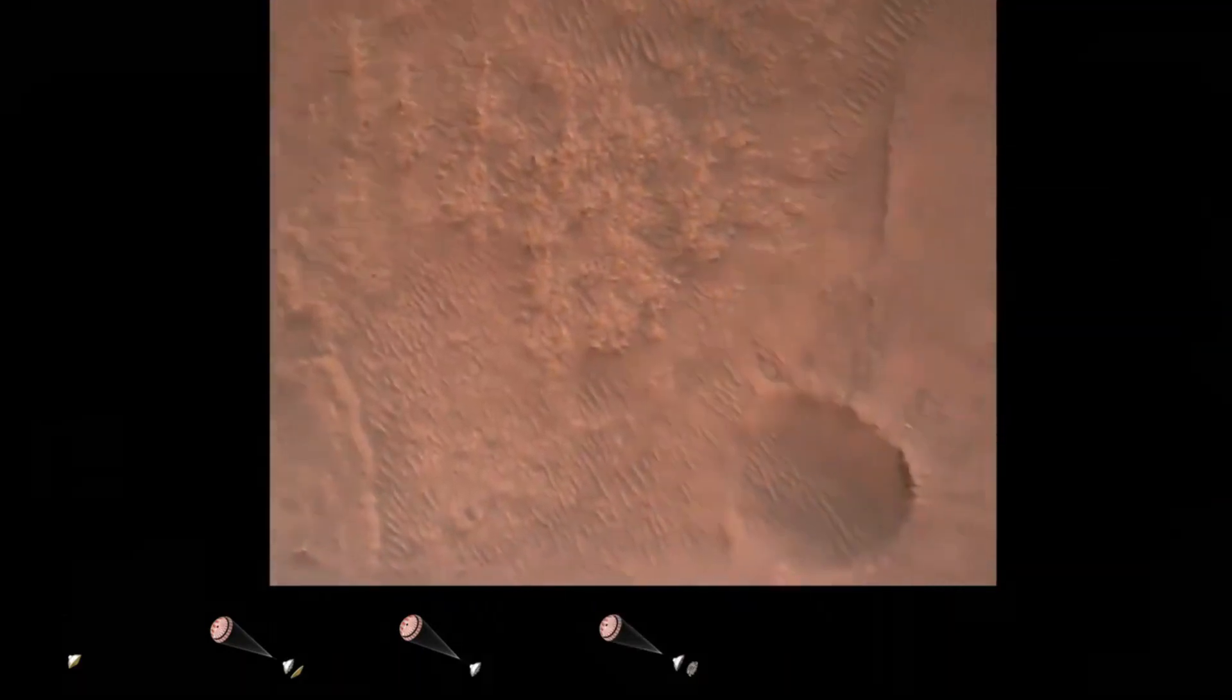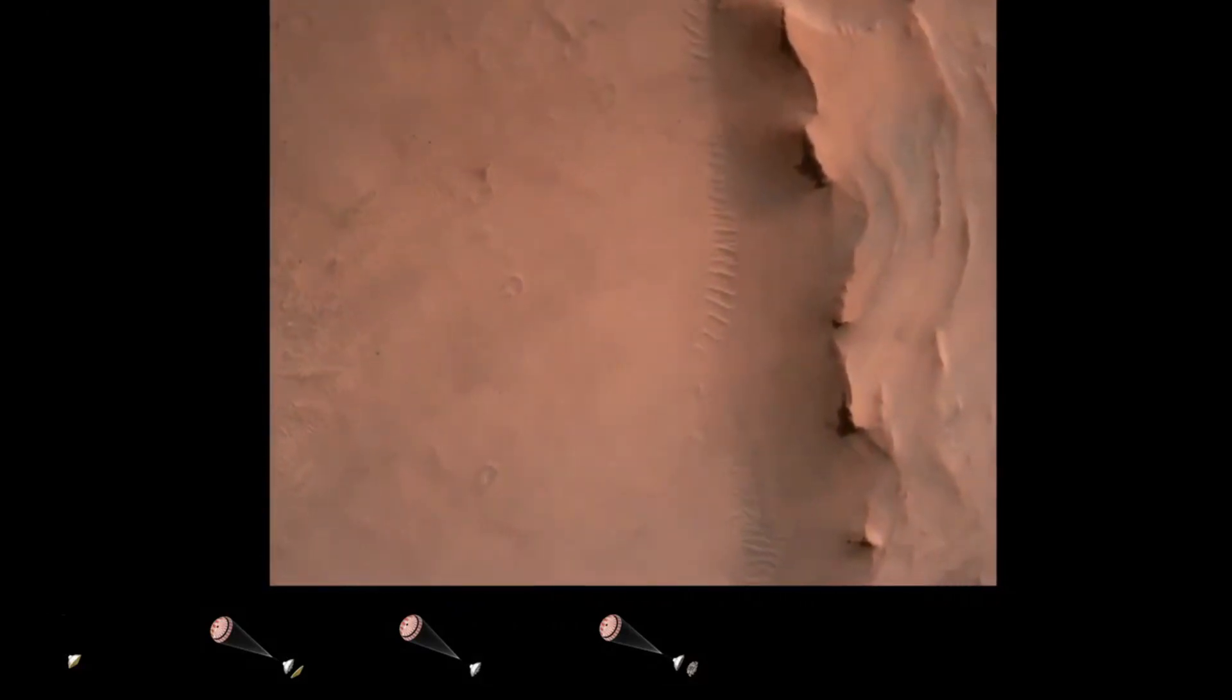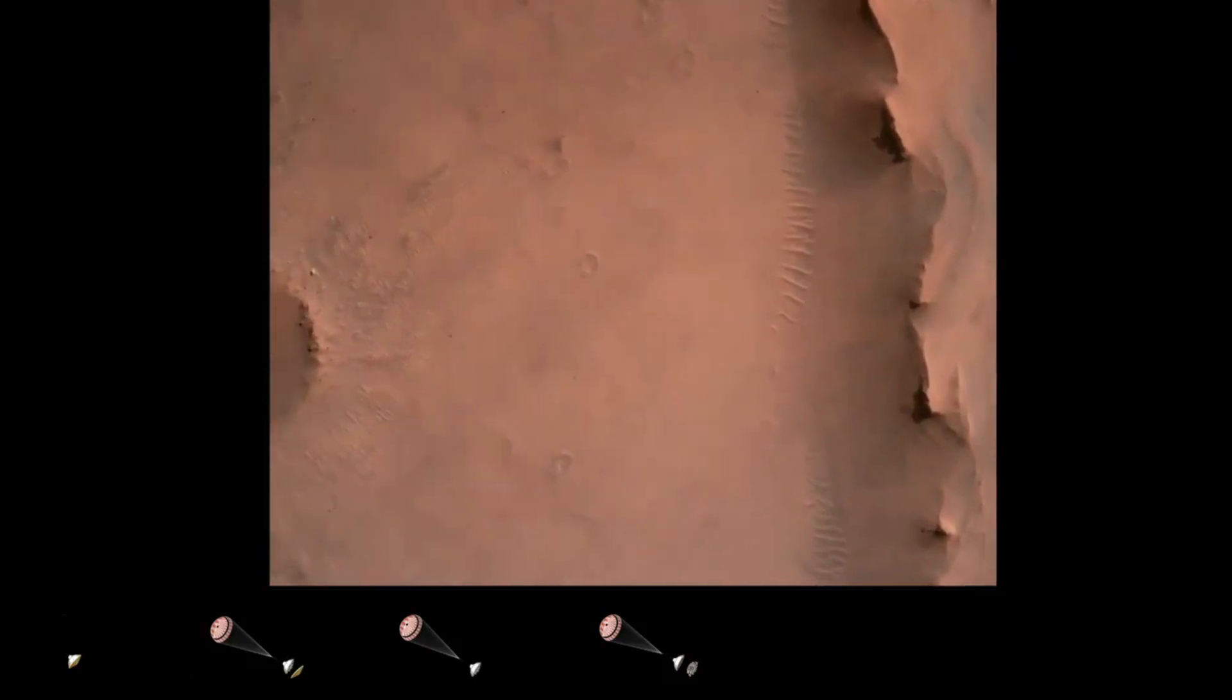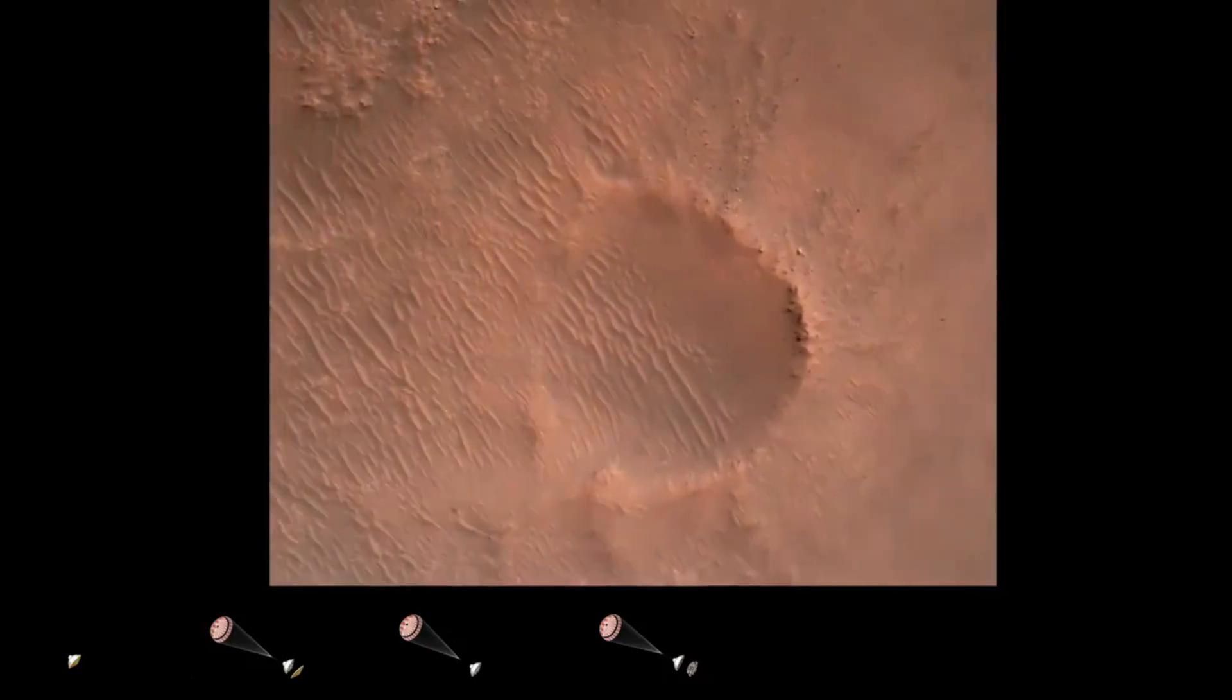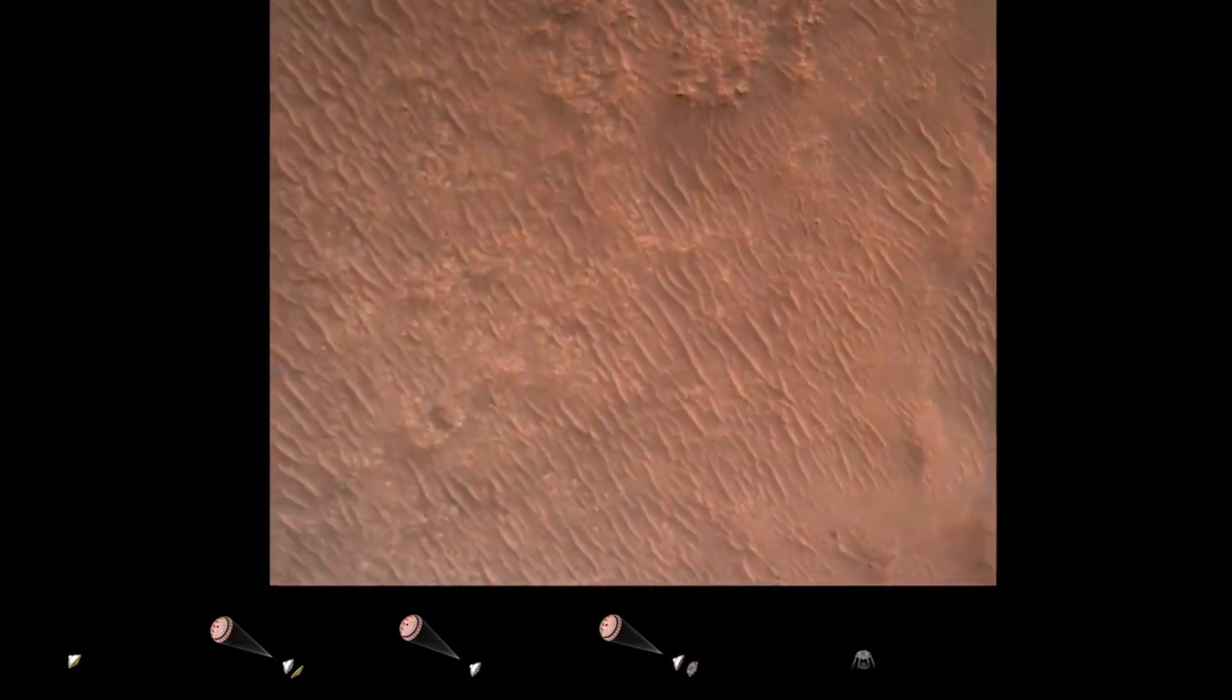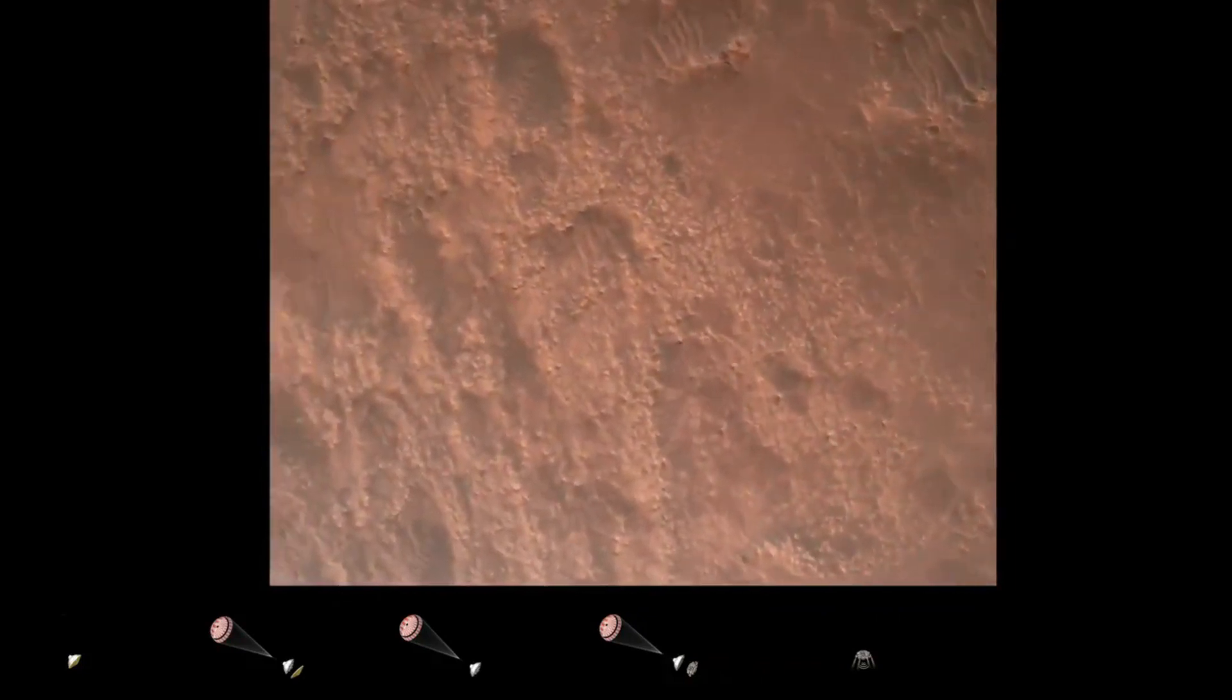Back shell set. Current velocity is 83 meters per second at about 2.6 kilometers from the surface of Mars. We have confirmation that the back shell has separated. We are currently performing the divert maneuver. Current velocity is about 75 meters per second at an altitude of about a kilometer off the surface of Mars.